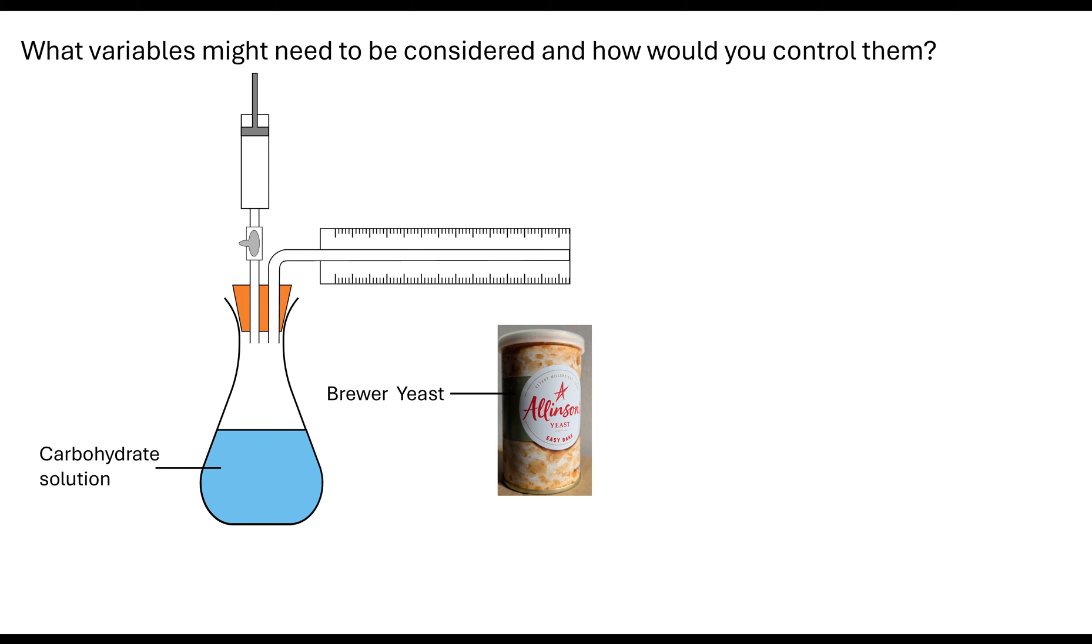So what things do we actually need to consider when we're doing an investigation? Well, the key thing is, what variables might you need to consider and how are you going to control them? Now, your investigation will be specifically about yeast. And if you think about the different carbohydrate solutions that yeast could utilize. So for example, they may give you a graph of results where they are looking at maltose, sucrose, lactose, glucose, fructose and how the fungi, the brewer's yeast, are able to utilize them.